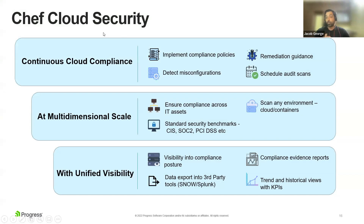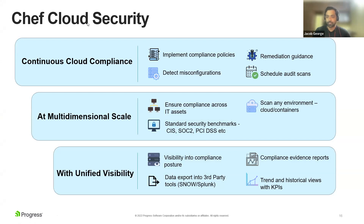From the customer story, we've already addressed most of the key aspects: visibility, evidence, reporting and alerts, and automation. With the SAP story, we've seen evidence, reporting and alerts, automation, and the scale that can be achieved. What we provide with Chef Cloud Security is continuous cloud compliance at multi-dimensional scale with unified visibility.